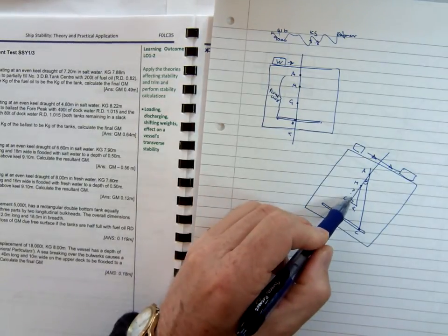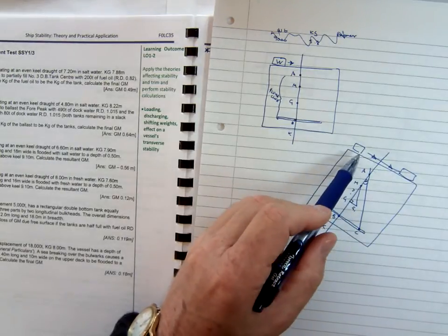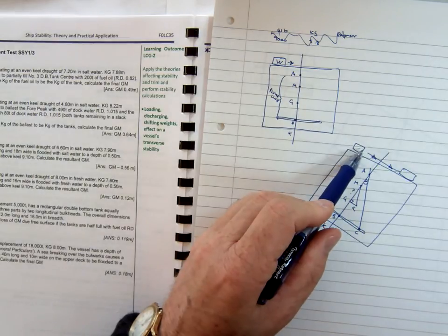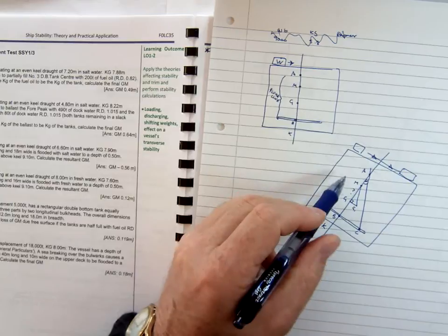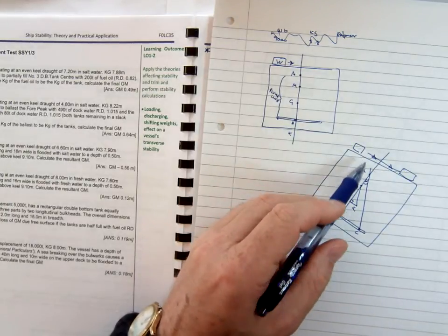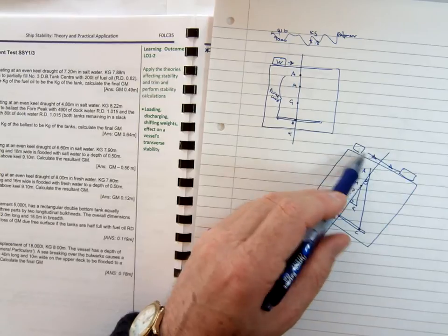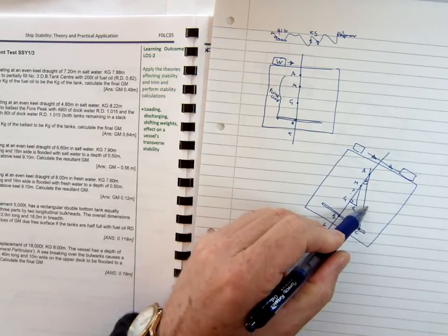gm is the value we're looking for. So g to g1 we can work out, because it's simply the weight that we've put on, multiplied by the distance it's travelled, divided by the total weight of the vessel. g to g1 is the listing moment—the weight times the distance over the final weight. We know these values.